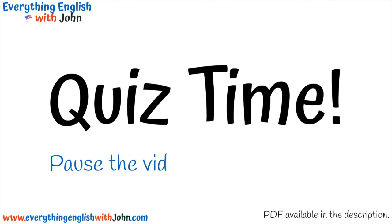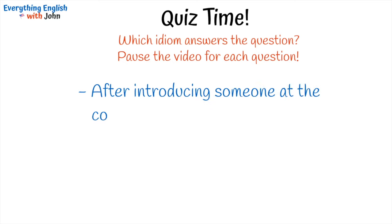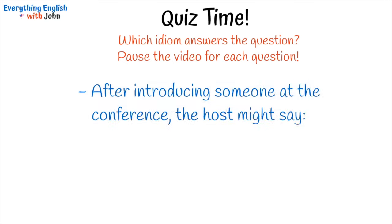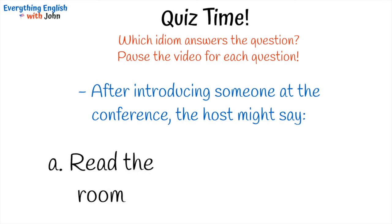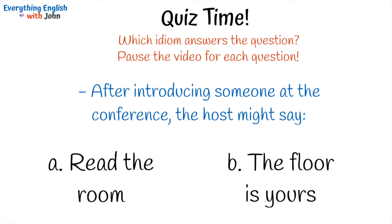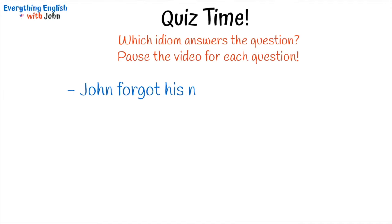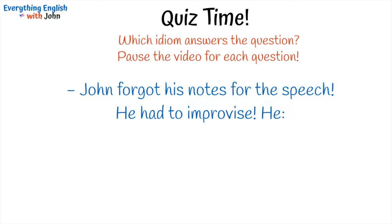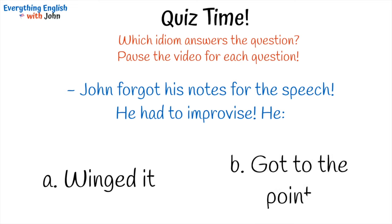Quiz time! Pause the video for each question. After introducing someone at the conference, the host might say: A) Read the room, or B) The floor is yours? That's right, it's B — the floor is yours. John forgot his notes for the speech and had to improvise. He: A) winged it, or B) got to the point? That's right, it's A — he winged it.